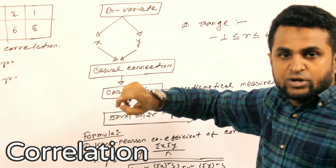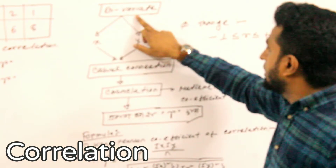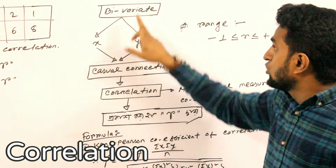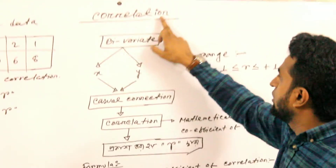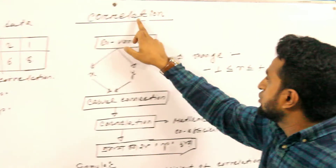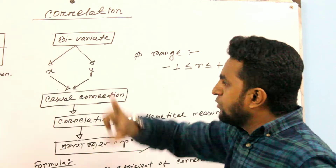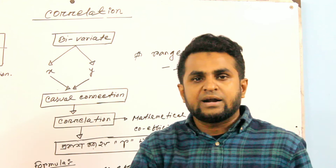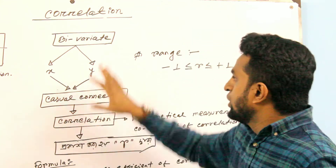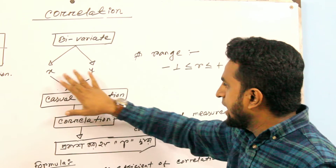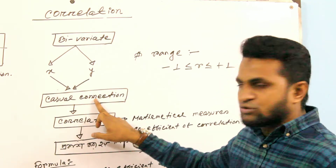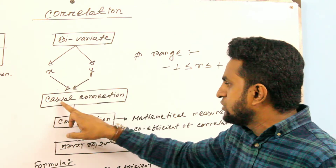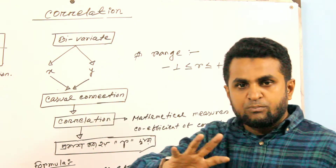Correlation is called bivariate — bivariate means two variables, D4 means X and Y. So, what is the relation? It means correlation. Correlation means bivariate: variable X and variable Y. So, we begin to change X; when X changes, Y also changes. It means a causal connection.